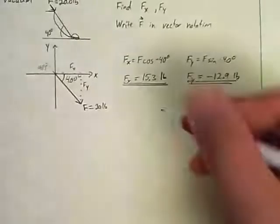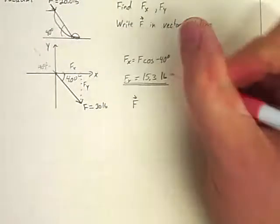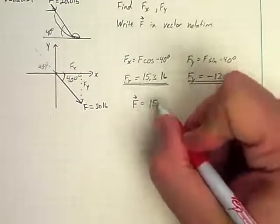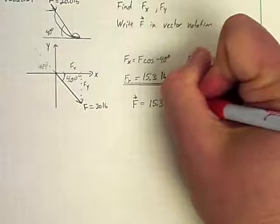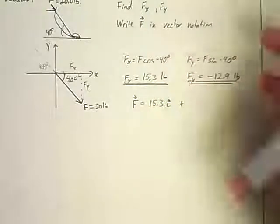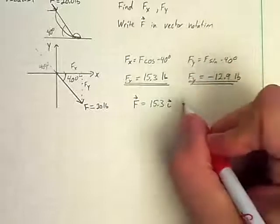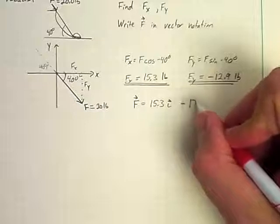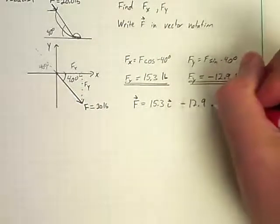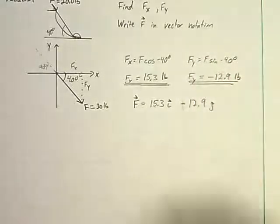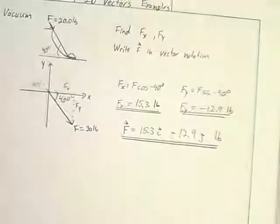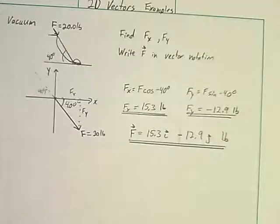And then remember to write in vector notation. Remember vector notation is the function F or the vector F is the x part times the unit vector i, I should make this minus because it's negative, plus the Fy part times the vector j. Turns out it's negative so I'm going to have a negative there, negative j direction. I should still include units. And that's question A. So that one was not too painful.